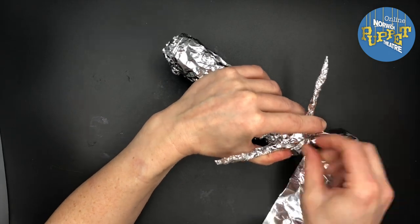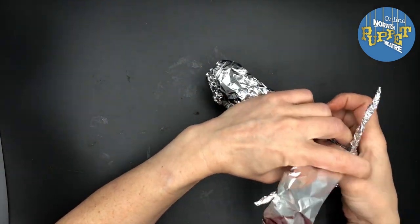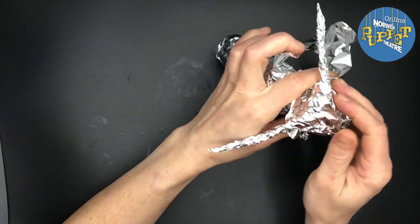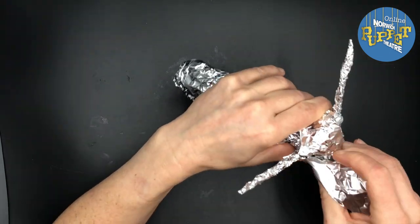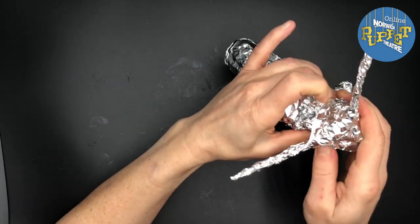So I might need to add another piece of foil, another strip just to make sure it's really secure. And then once my horns are on I'm going to mold them, push them, wrap them around my fingers to make sure that they're curly and they're all in the right place.